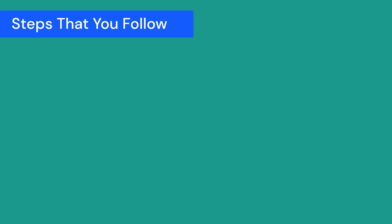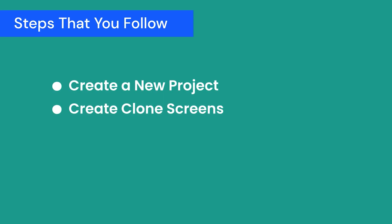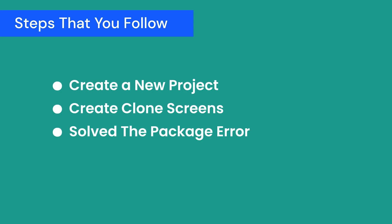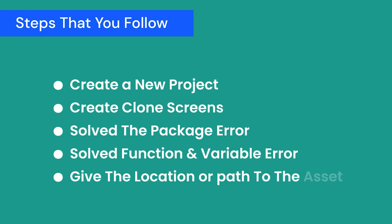The steps you have to follow are: first, create a new project in Prokid; then copy-paste the screen you want to use into your project; then solve the package errors; then solve the function and variable errors; after that, give the location or path to the assets you are going to use, copy them into the project and set the correct path. I'll also show you a mobile preview of how it looks after importing the screens.